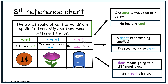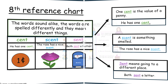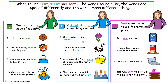Eighth reference chart. The words sound alike but are spelled differently and mean different things. The first, cent, is the value of a penny, as in he has one cent. The second, scent, is something smelled, as in the rose has a nice scent. And the third, sent, means going to a different place — Beth sent a letter. This reference chart demonstrates four sentences showing how each word is used.